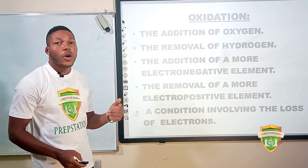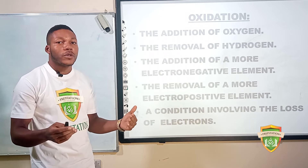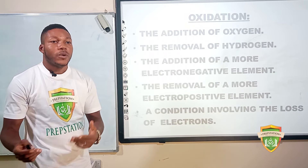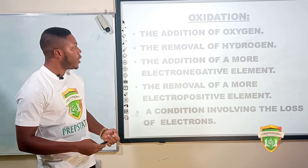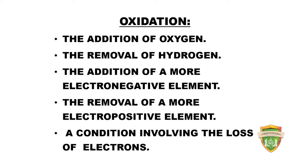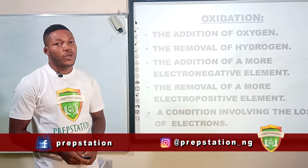Oxidation is the opposite of reduction, and these reactions occur complementarily — one cannot take place without the other. Oxidation means: the addition of oxygen, removal of hydrogen, the addition of a more electronegative element, the removal of a more electropositive element, and a condition involving the loss of electrons. The key definition of oxidation is the one involving loss of electrons.